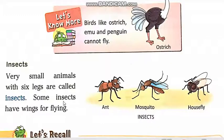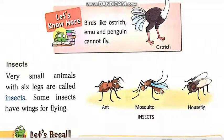Some insects have wings for flying. Kuch insects ke wings hotay hain joh unko fly karne mein, urnne mein help kertay hain. Look, mosquitoes and house fly, they have wings, inke wings hain.